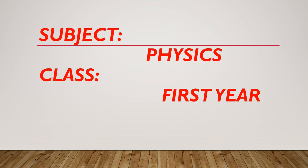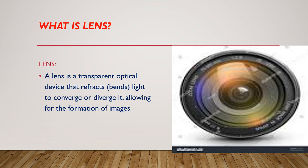Let's explore 15 questions of Physics with Answers. What is a Lens? A lens is a transparent optical device that refracts light to converge or diverge it, allowing for the formation of images.